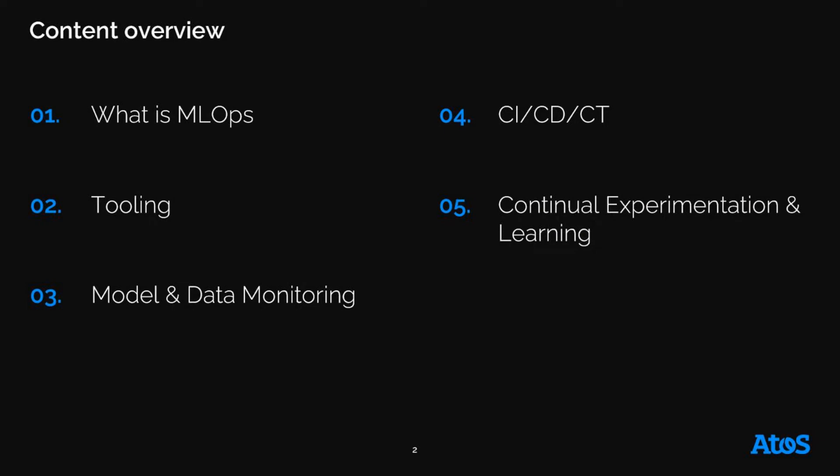We will start by defining what is MLOps. Then we'll talk about the architecture and the different tools we use for this internal project. In the first section, we will see how we handle drift by monitoring both data and models. Fourth, we'll talk about automation, which is essential to DevOps practices with CI/CD. And finally, we will dive into continual experimentation and learning, which is really the fun part of MLOps.